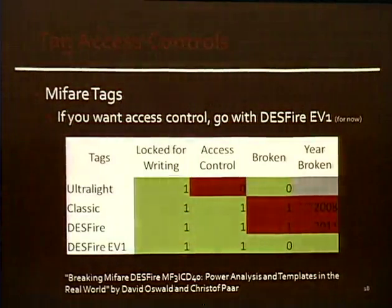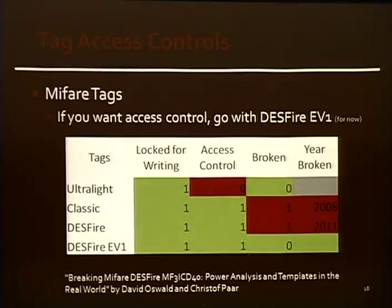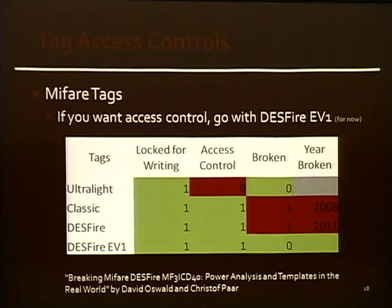MiFare is a big tag manufacturer — most of the tags we've seen are MiFare tags. The ultralights are what we've been showing. They don't have much space, they can be locked for writing, but they have no access control, so you can read anything on them — they haven't been broken. The Classics, like that Charlie card shown earlier, were torn apart in 2008, so the access control on those is basically non-existent. The DESFire tags, until a couple months ago, hadn't been broken and had great access control — now clearly they don't. One of the last remaining tags with good access control is the DESFire EV1. A couple of those transit cards are actually using DESFire EV1, so for now the data is safe on those tags.